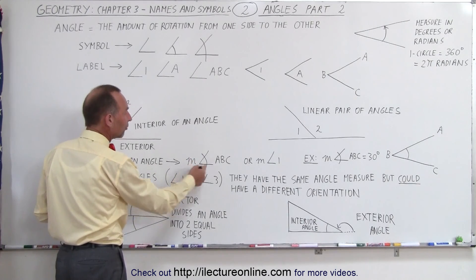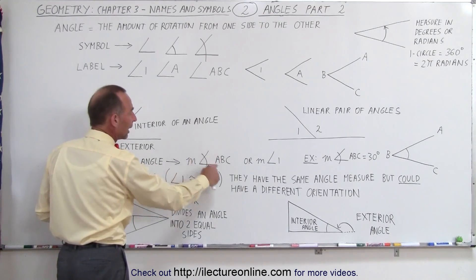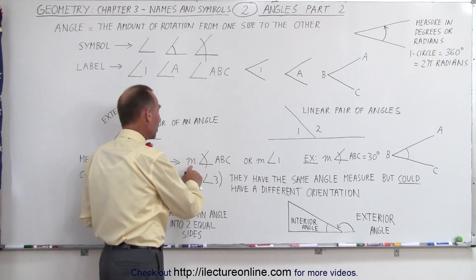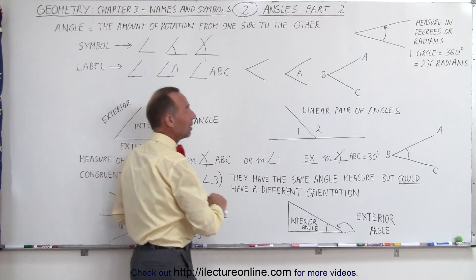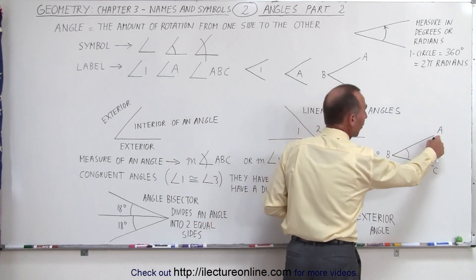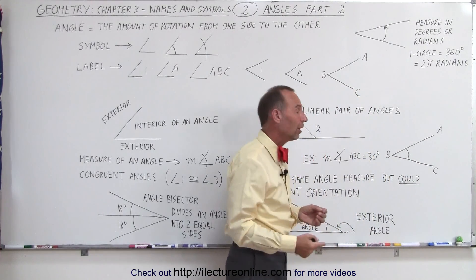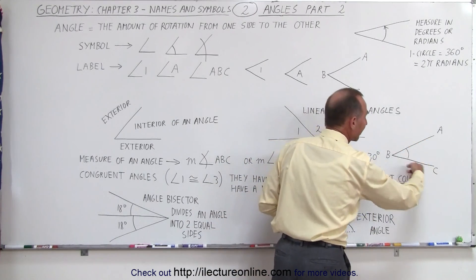We can write it as the measure of angle ABC. Notice again, A is the far end of the side, B is the vertex, C is the far end of the other side, so we're indicating that we're talking about this angle here.